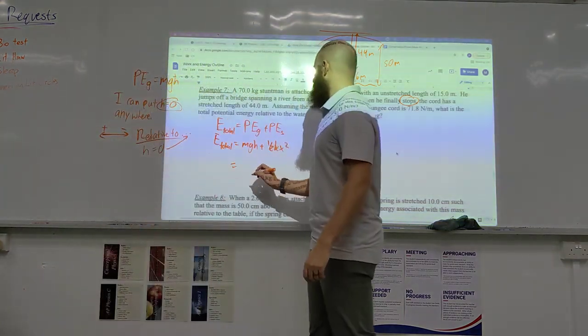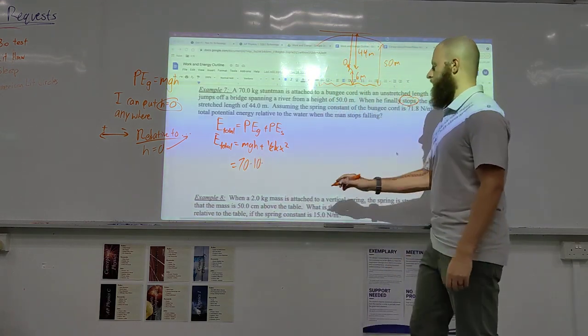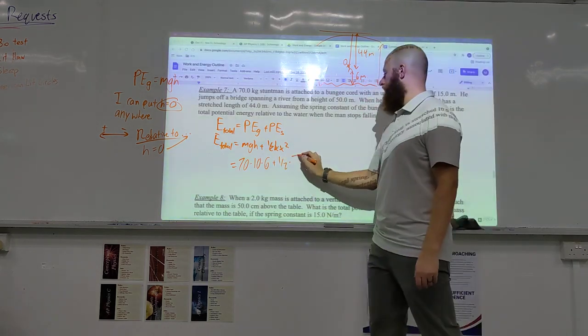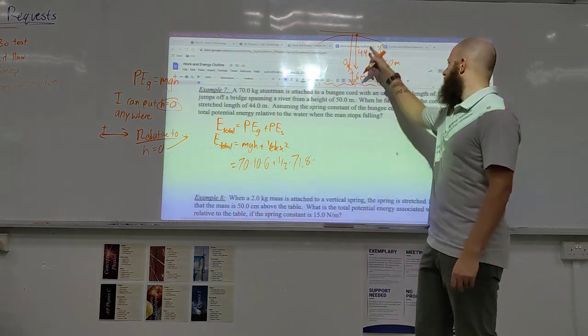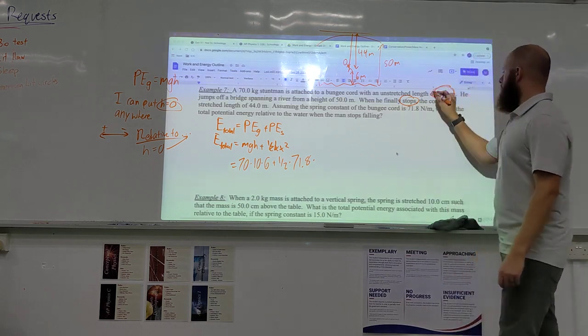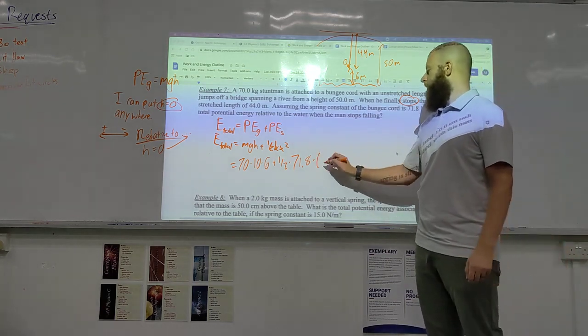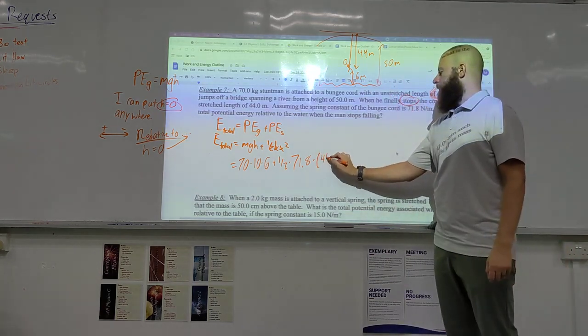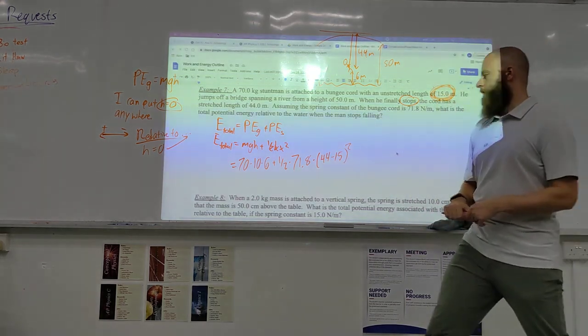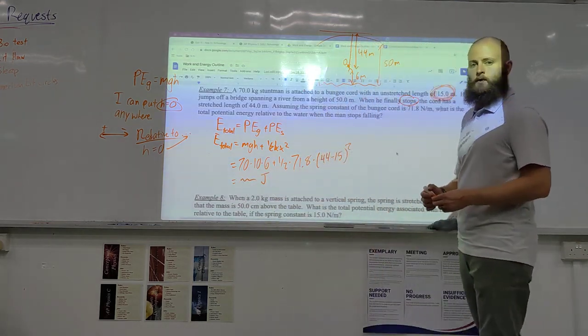Okay, so, this is equal to my mass, which is 70, times 10, times what's his height? 6. Plus, 1/2 times K, which is 71.8, times X squared, which is 44. Oh. Okay, this is very important. It has an unstretched length of 15. So, one way to do this, I need to subtract these two, right? So, it would be 44 minus 15 squared. So, just do the calculation.